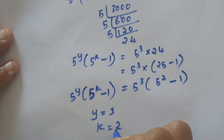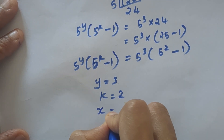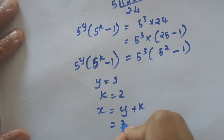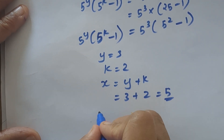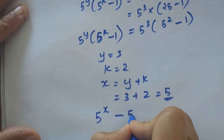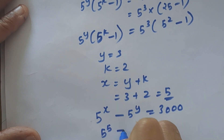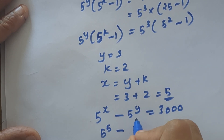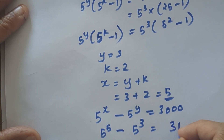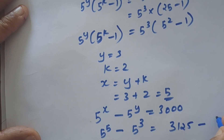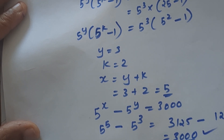We need to find X, not K. We know X equal to Y plus K, which is 3 plus 2 equal to 5. Let's verify: the original equation was 5 raised to X minus 5 raised to Y equal to 3000. So 5 raised to 5 minus 5 raised to 3 equals 3125 minus 125, which equals 3000. Verified!